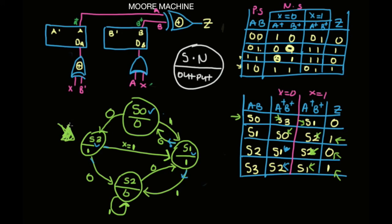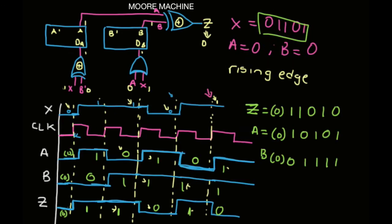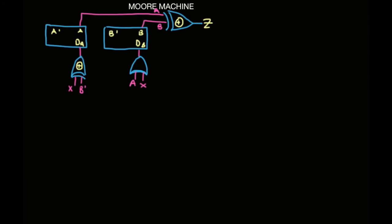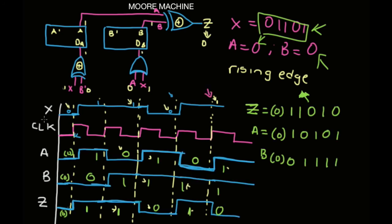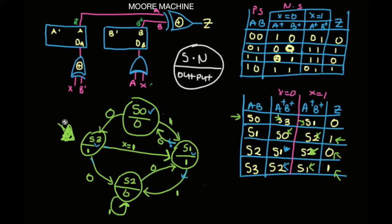That is the state diagram for the example we used. To recap: we started with the circuit, made the timing diagram, were given the X values and A, B with a rising-edge-triggered machine, used yellow lines to show triggers, derived the Z, A, and B outputs, then came here to build the state graph. That is everything you need to know about the Moore machine.